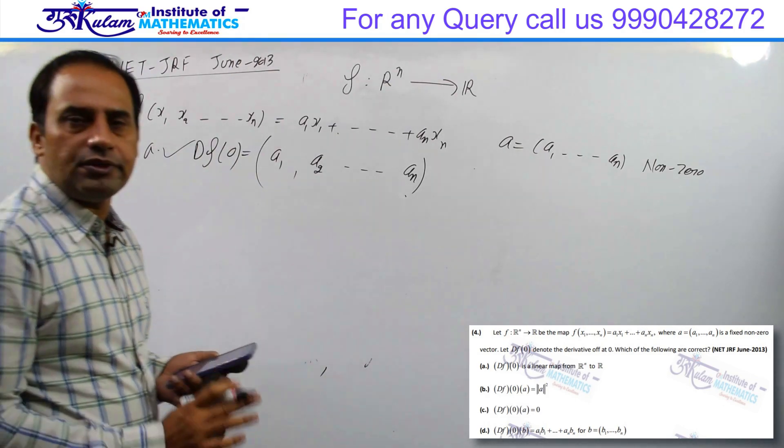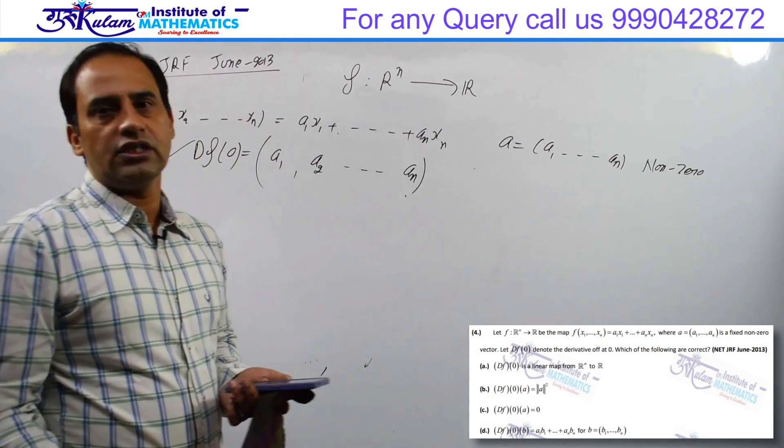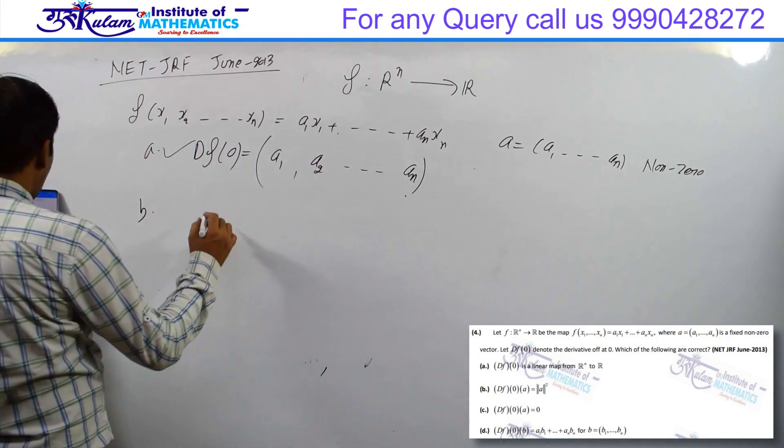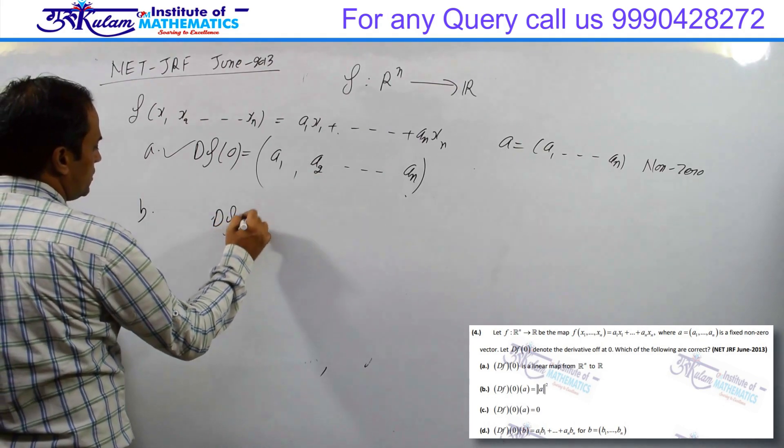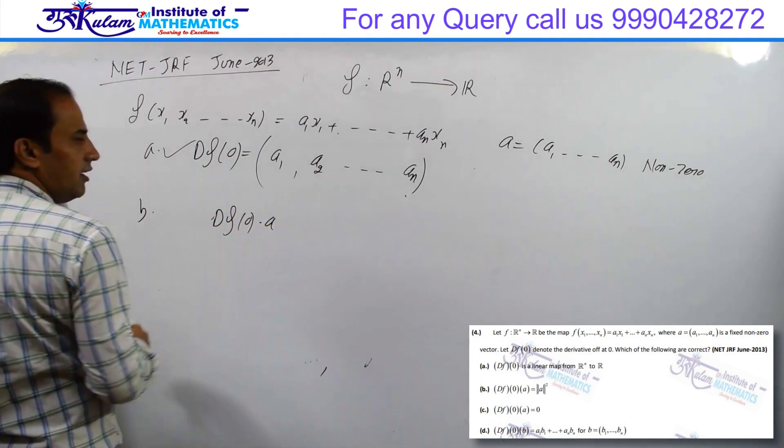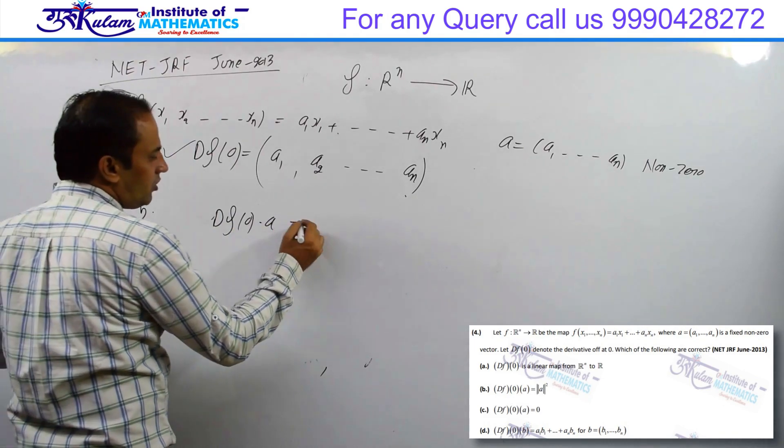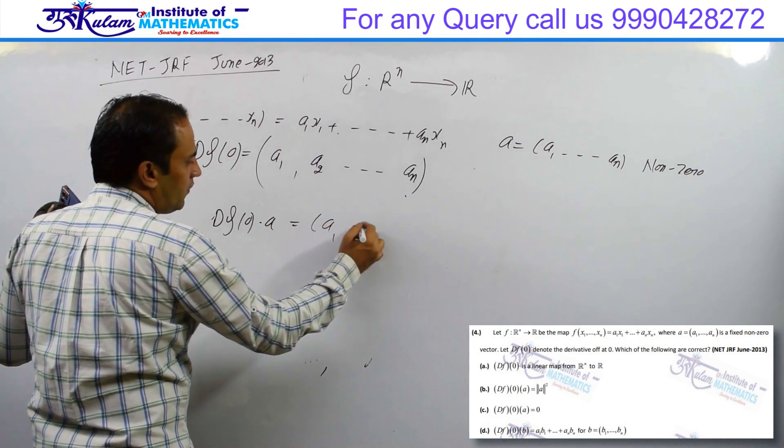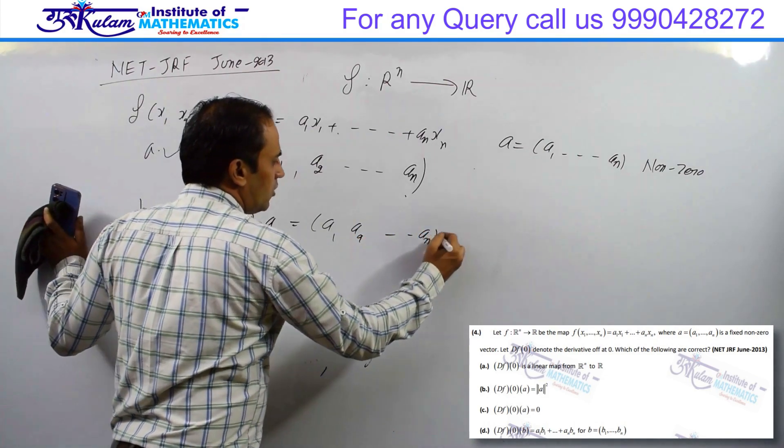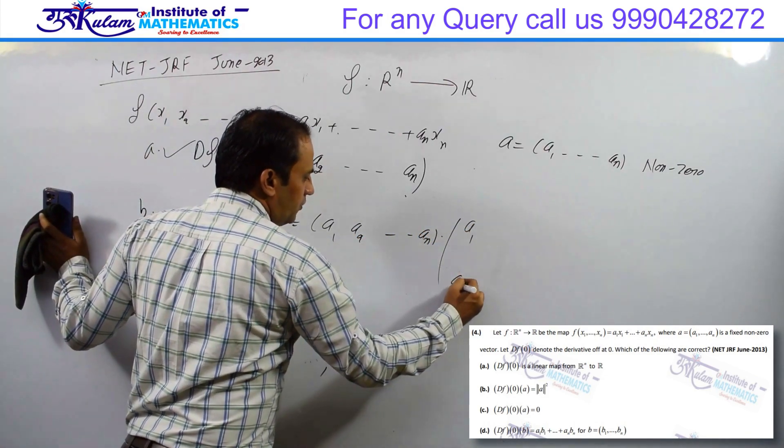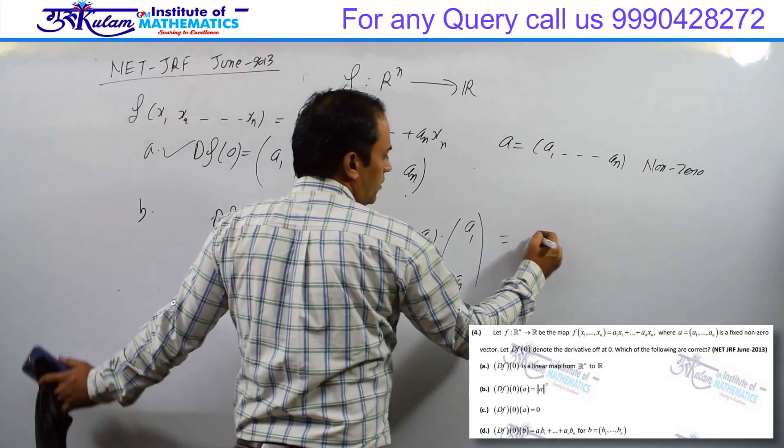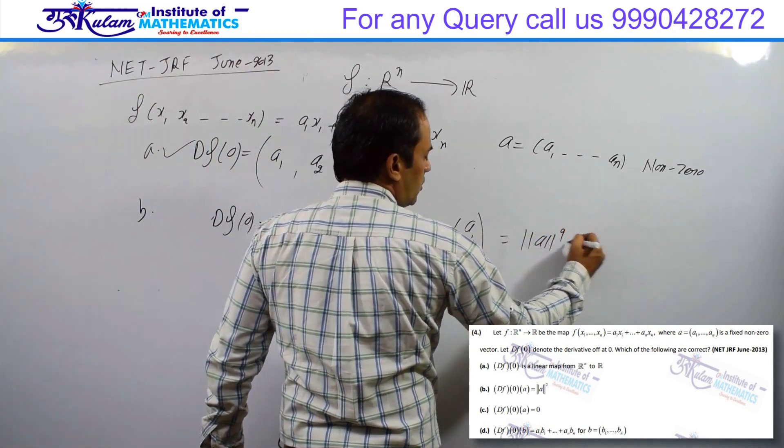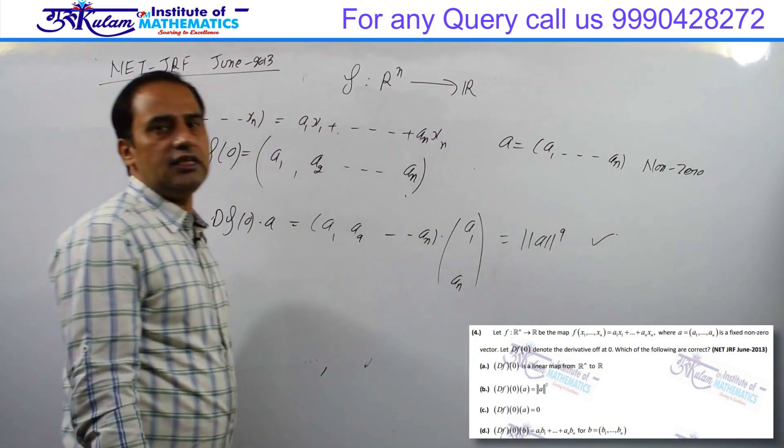This is basically the matrix representation of a linear transformation, so it is also a linear transformation. Second option: df0 at a. The meaning of df0 at a is to take the dot product of this vector with a. So (a1, a2, ..., an) dot product with (a1, a2, ..., an) equals summation of ai squared, which is the norm of a squared. The second option gives exactly this.